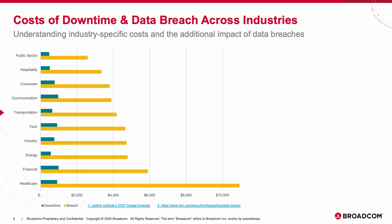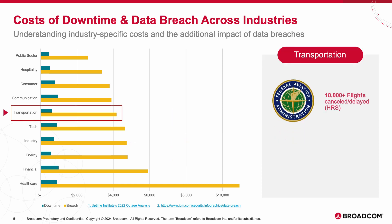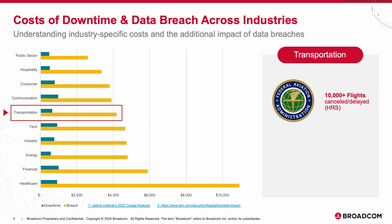Let's look at a few real-world examples. The Federal Aviation Administration, or FAA, once went down because a contractor unintentionally deleted files while working to correct synchronization between the live primary database and a backup database. This resulted in over 1,300 flight cancellations and 9,000 delays.